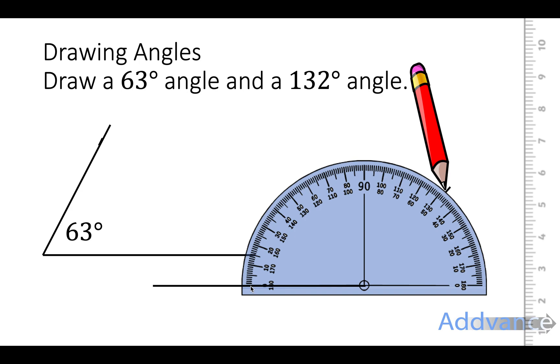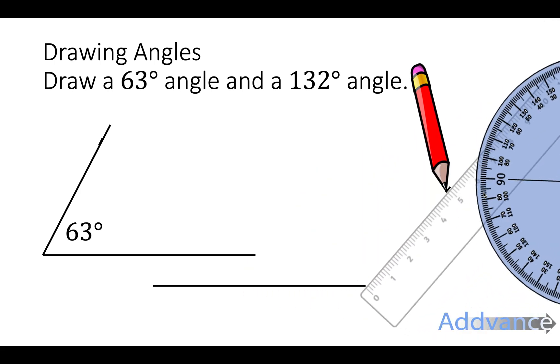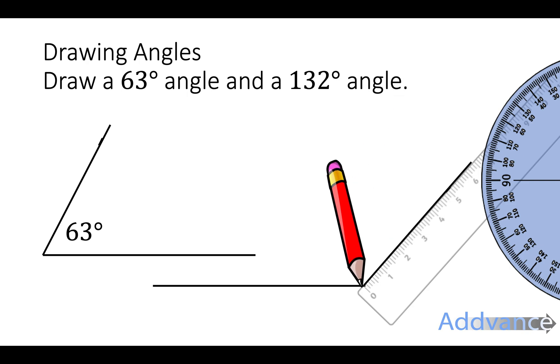Again we're counting from 0 over here and round. So we're counting from this zero line going round the outside scale to 132. And we do a line like that. And that is a perfect 132 degree angle.